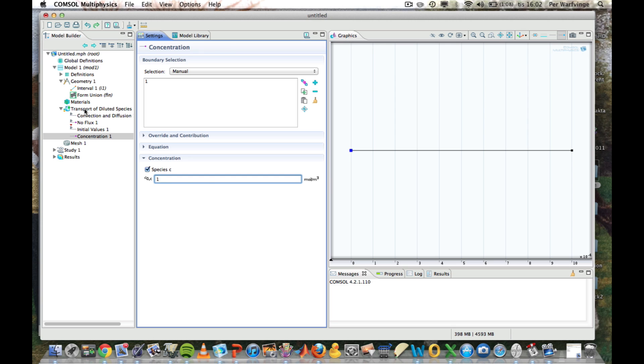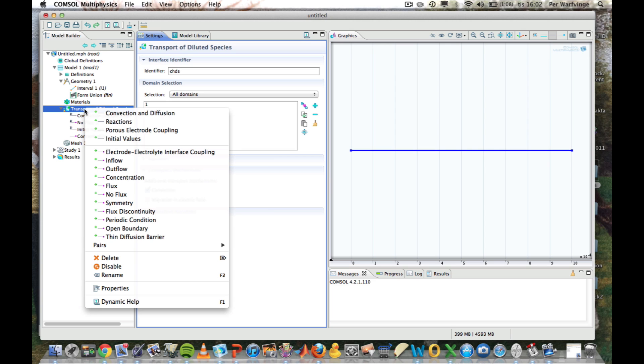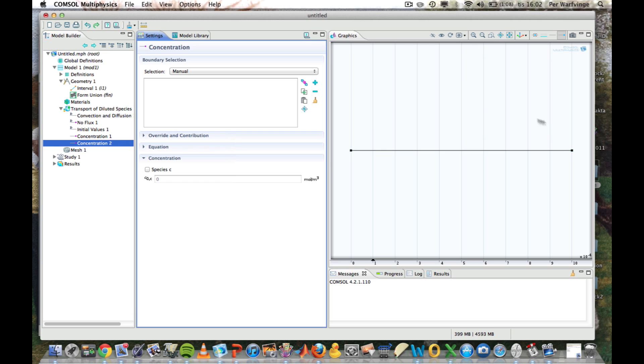Then we create a new one. Concentration to the right this time. Select it manually. And define the concentration as zero.